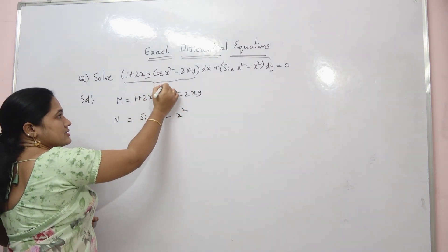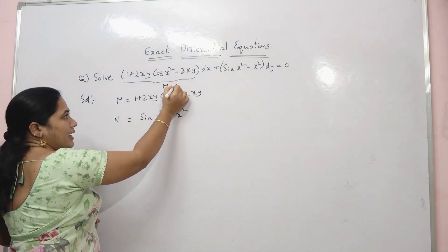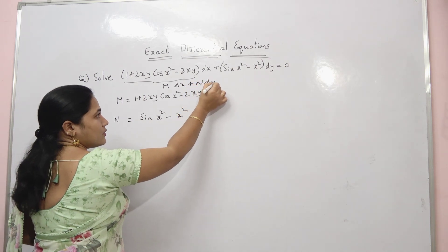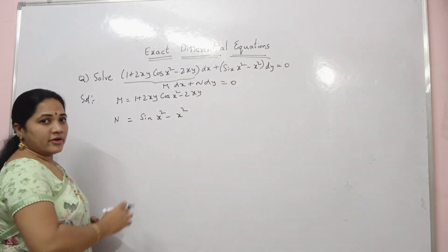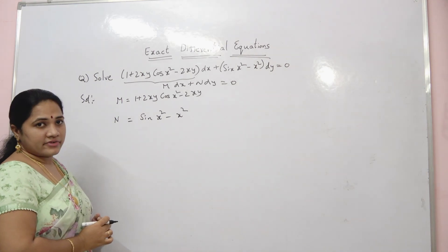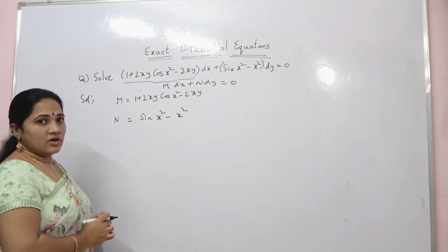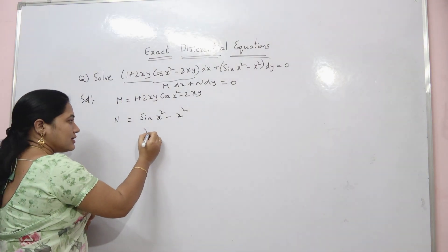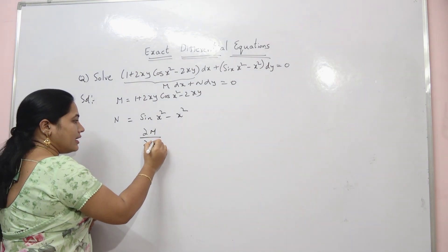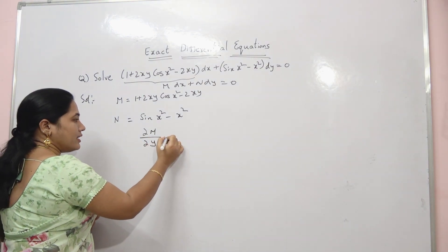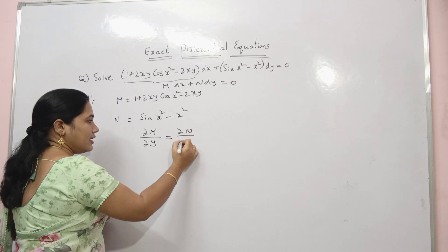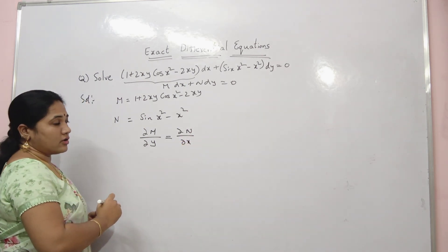This is in the form M dx + N dy = 0, and you have to check whether the given equation is an exact differential equation or not. For that, check whether ∂M/∂y equals ∂N/∂x.